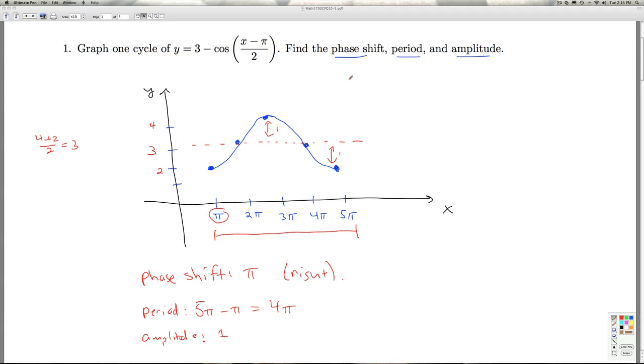So that's one way to graph this curve. Another way to graph this curve is to determine these three characteristics up front, along with the vertical shift, and then graph it that way. And that's what we're going to do next.